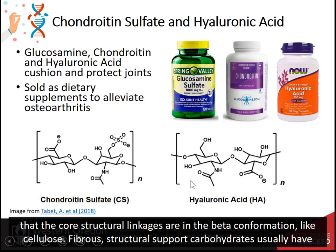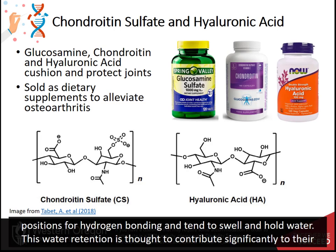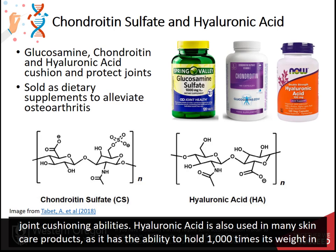Note that the core structure linkages are in the beta-conformation, like cellulose. Fibrous structural support carbohydrates usually have positions for hydrogen bonding and tend to swell and hold water. This water retention is thought to contribute significantly to their joint cushioning abilities.